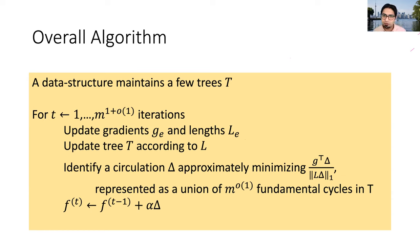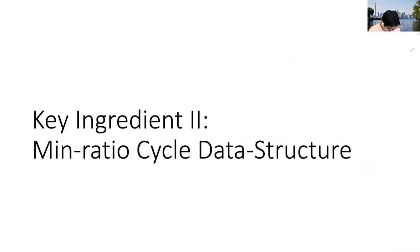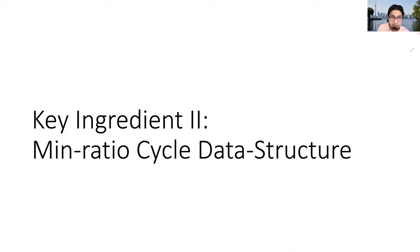We use this representation to efficiently update our existing flow with a small amount of circulation along the solution Delta, completing the iteration. We repeat for almost linear number of iterations. I want to give you one more key idea: why certain kinds of trees can be good for solving these problems approximately, and specifically that low-stretch spanning trees are very useful.